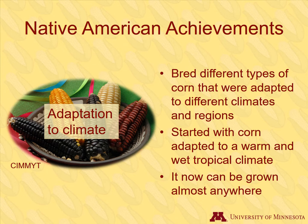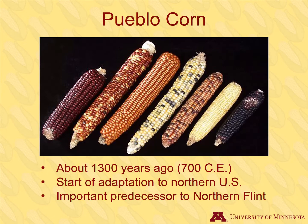By the time Columbus arrived to the New World, corn was being grown in a wide variety of climates — from tropical islands to deserts to regions with very cold winters. Remember where corn was domesticated? It was in central Mexico, which had a warm and wet climate. Corn plants from this era would not have been adapted to growing in Minnesota, for instance. We have Native American breeders to thank for the fact that we can now grow corn in the Midwest.